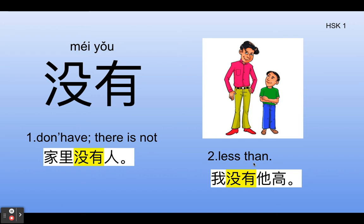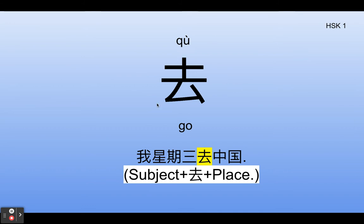The second meaning: less than, compare. For example, 我没有他高 — I'm not as tall as him. 我没有他高.